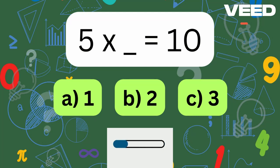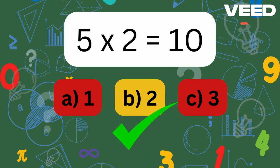5 times what equals 10? Yes, 5 times 2 is equal to 10.